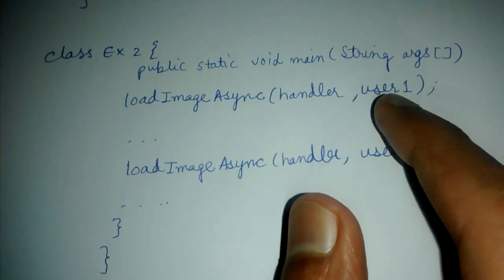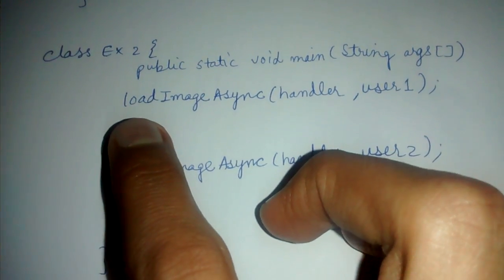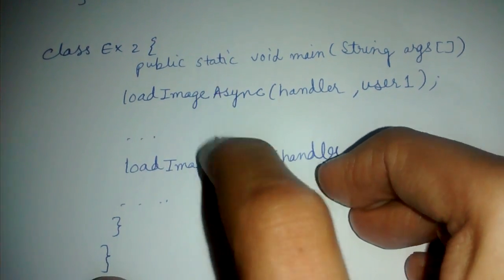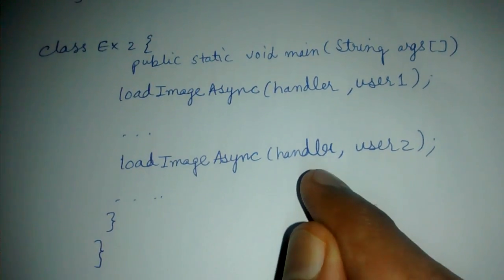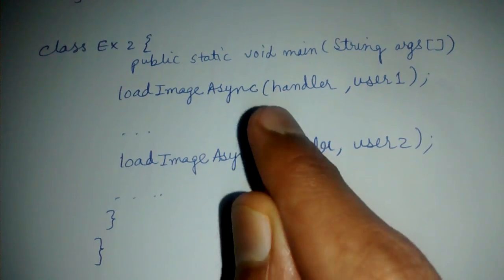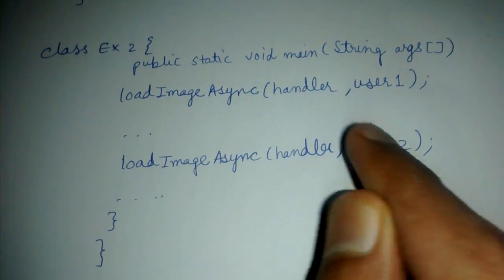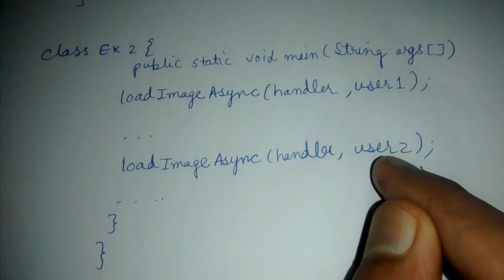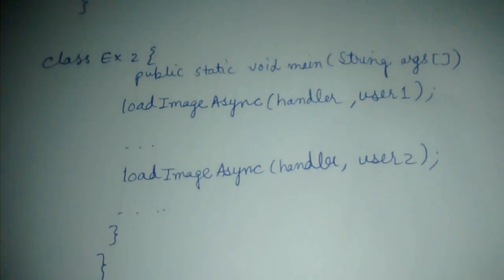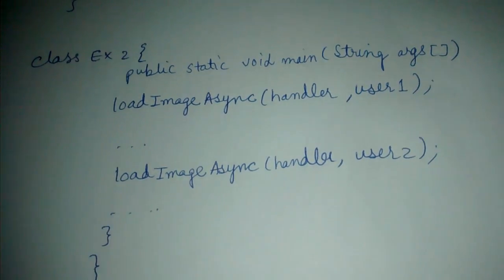Let's say you are calling this load image async method multiple times. When your handler is called, it should have a way to know which call it is returning to—user 1 or user 2. Otherwise, you will not be able to call this method more than once.